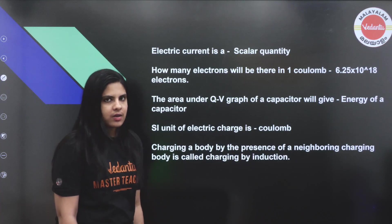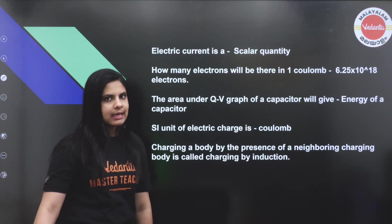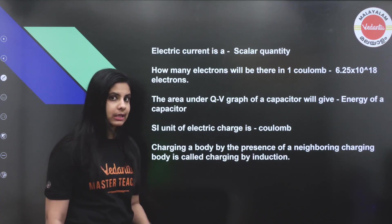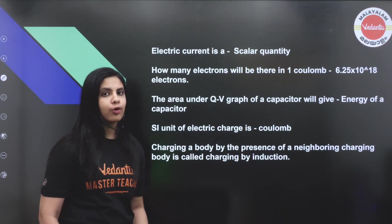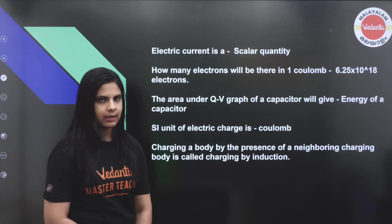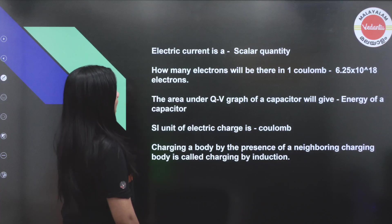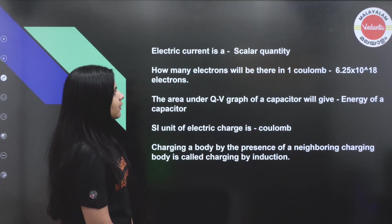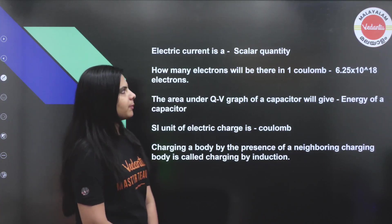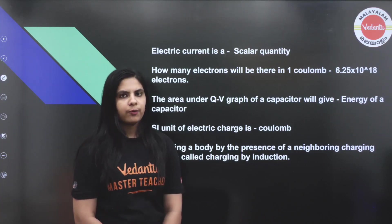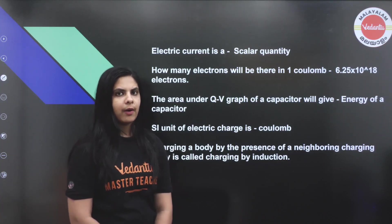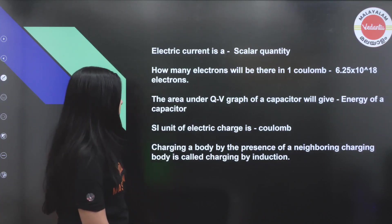Electric current is a scalar quantity. The number of electrons in one coulomb is 6.25 × 10^18 electrons.